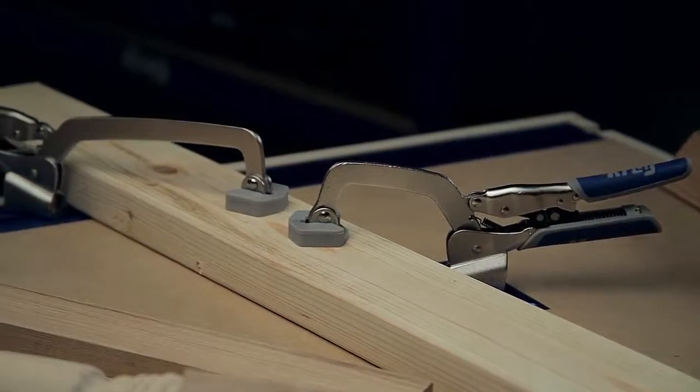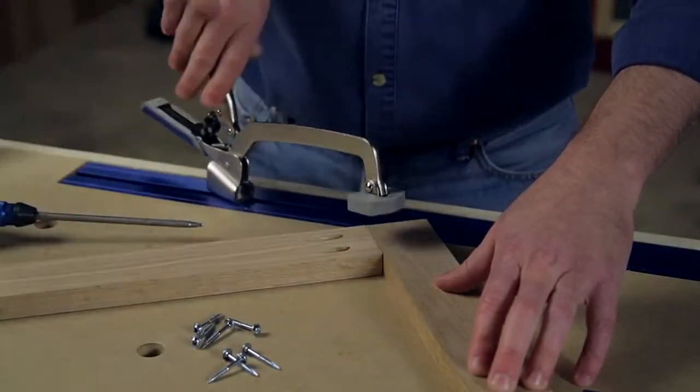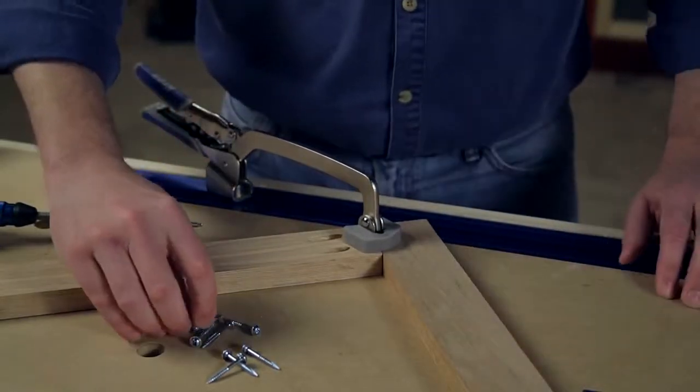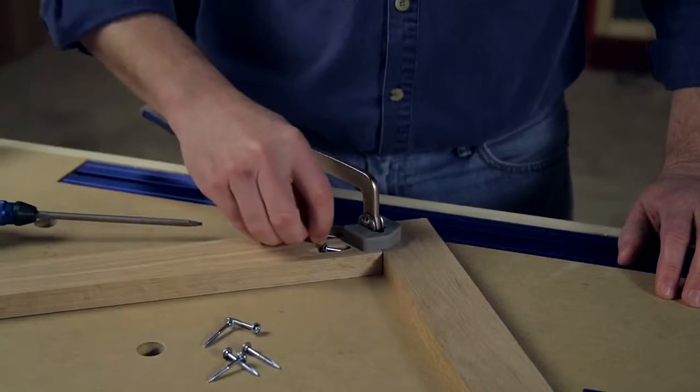They're available in 3-inch and 6-inch sizes and offer all the great features, strengths, and capacities of AutoMax face clamps. But bench clamps are designed to hold workpieces and materials in place on your benchtop.